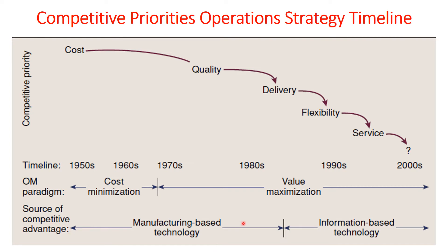After 2000 the source of competitive advantage changed. Earlier it was manufactured-based technology focused on minimizing cost; then value maximizing, maximizing service and delivery; and more recently, information-based technology — service, flexibility, or information-based technology.